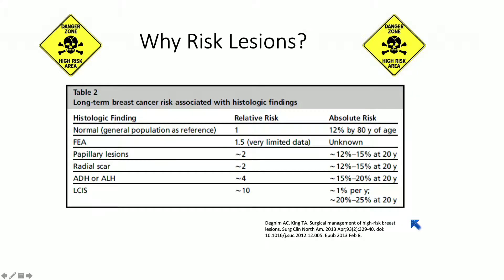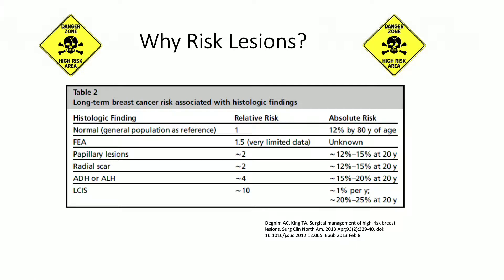Why are these the high-risk lesions? All of them carry a slightly elevated risk of breast cancer compared to the normal general population. FEA carries a very minimal slight increase in risk, as do some of the columnar cell lesions. Papillary lesions and radial scar are slightly more increased. Then we get to ADH, ALH, and LCIS, which carry a relatively significant increase in risk for development of further higher-grade lesions.